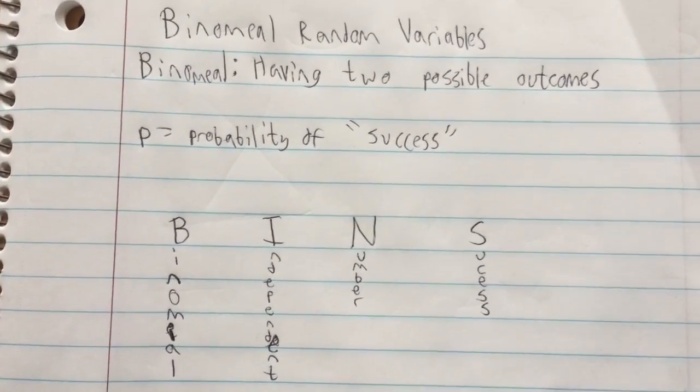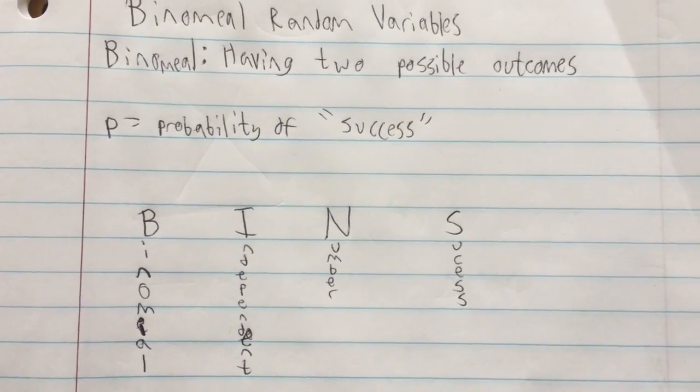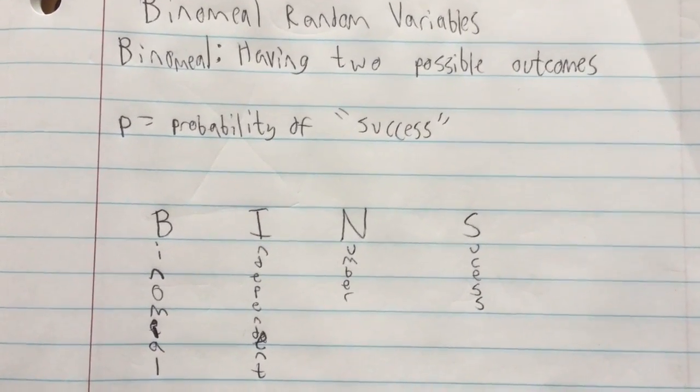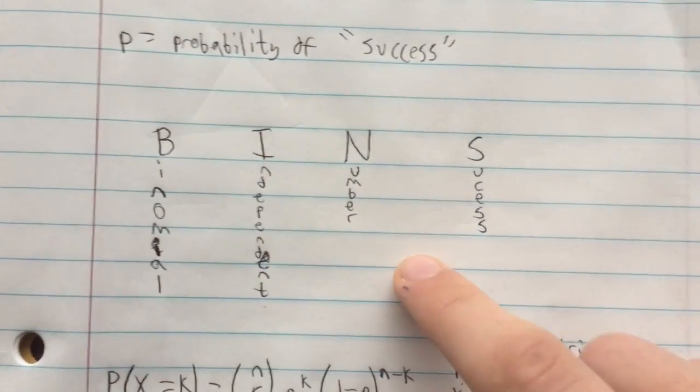So now let's think about how we're going to do calculations for binomial probability distributions. First off, our conditions need to be satisfied.